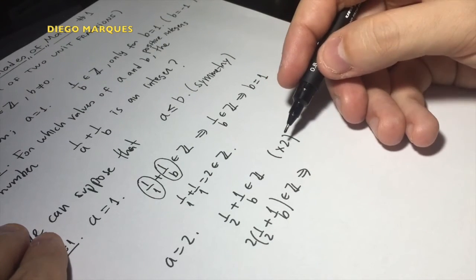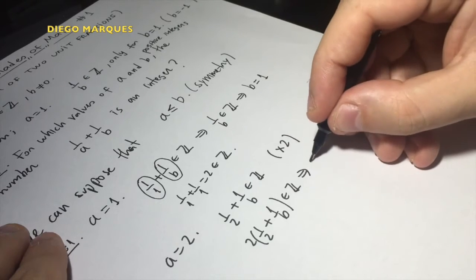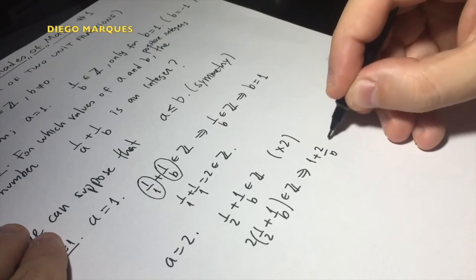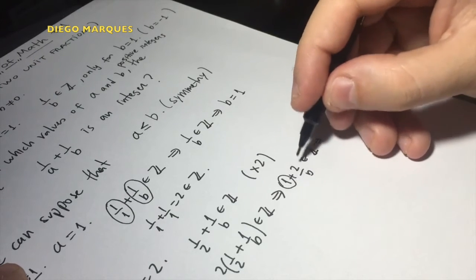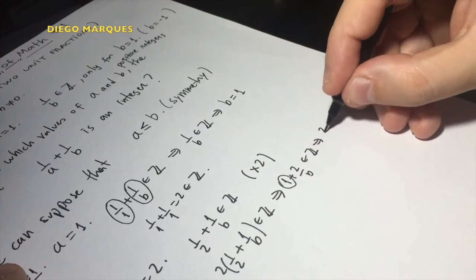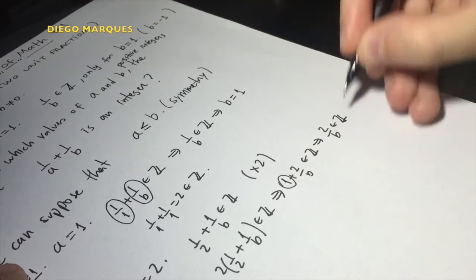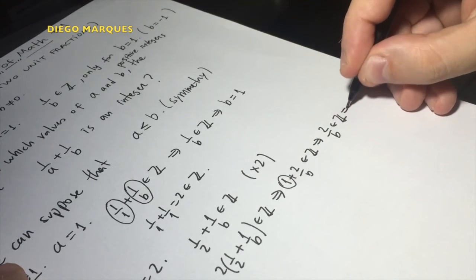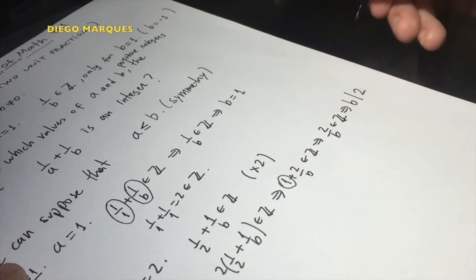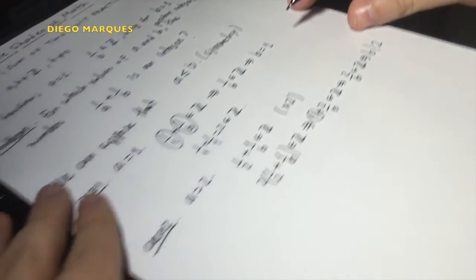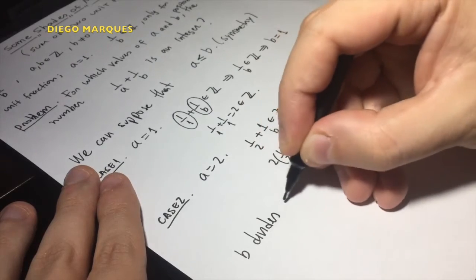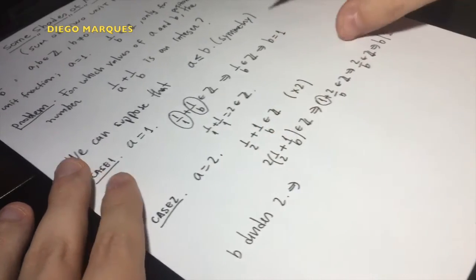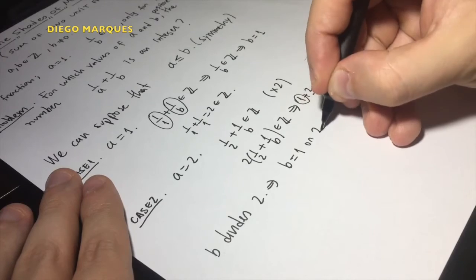Because if you multiply two integers, the result is still an integer. So this is 1 plus 2 over b is an integer. This implies that since 1 is an integer, 2 over b is an integer. And this implies that b divides 2. So b must be equal to 1 or 2.